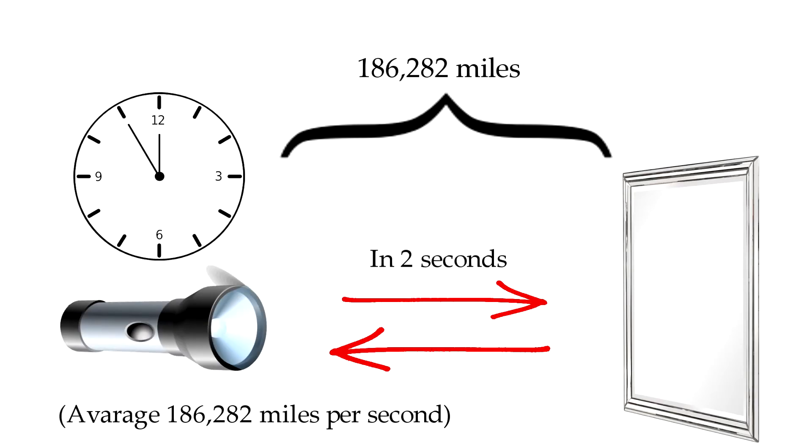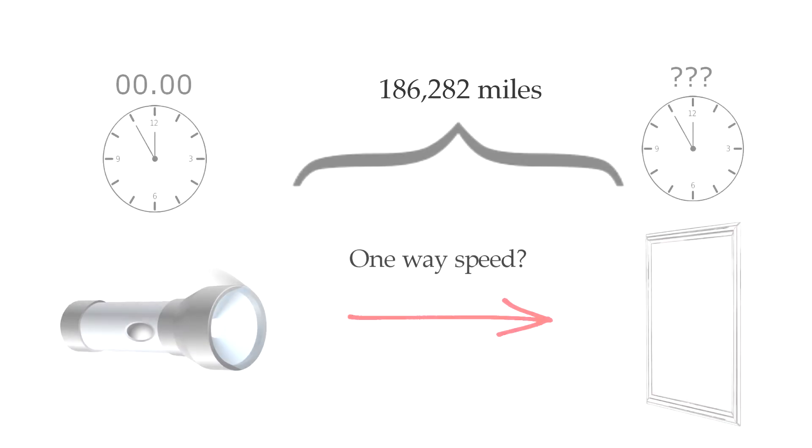Let me explain this. The round-trip average of the speed of light is 186,282 miles per second. In other words, the speed of light is measured by having it travelled in two directions and getting an average of 186,282 miles per second.